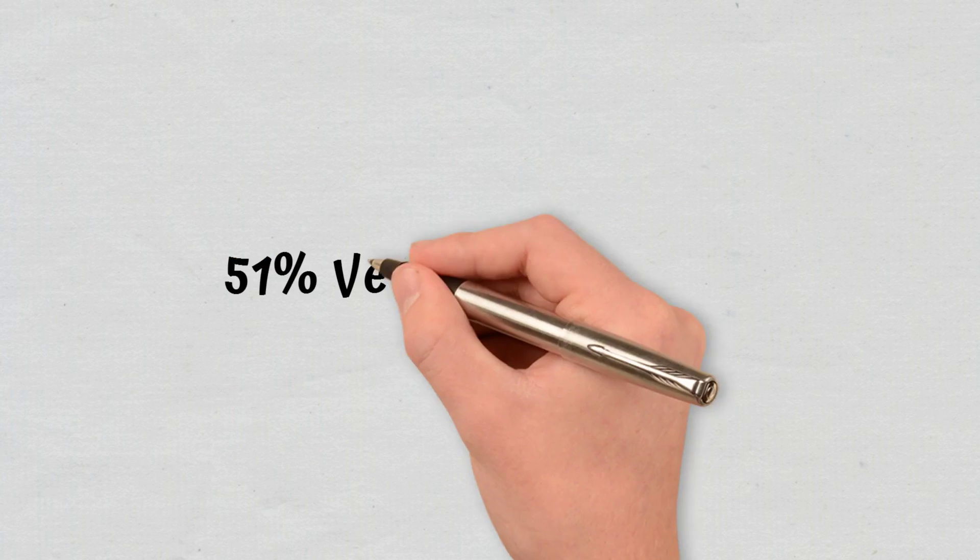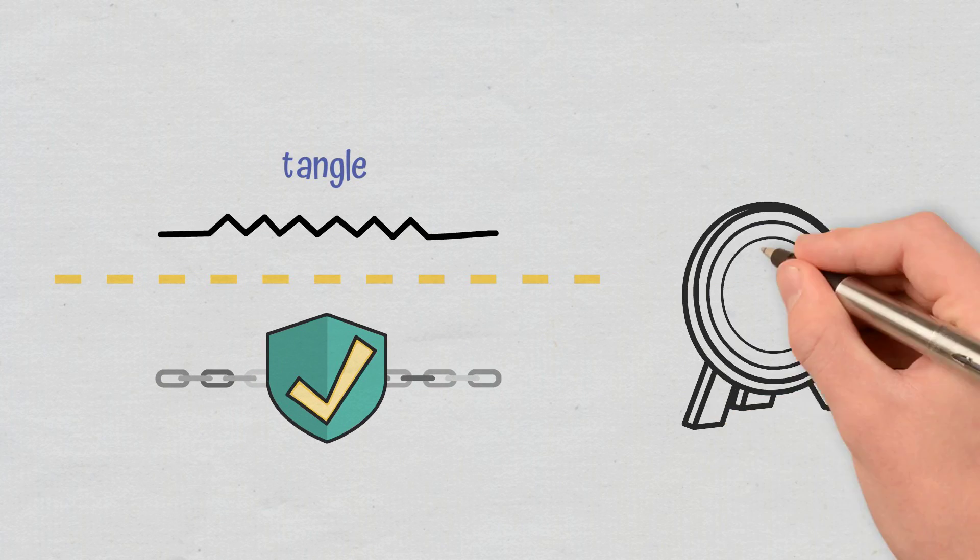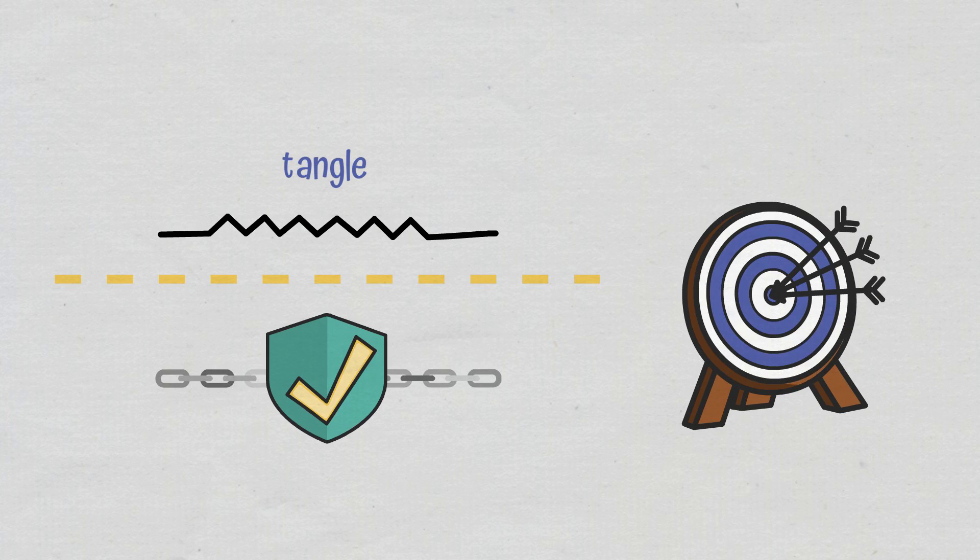51% vs. 34% attack. The tangle, which represents a distributed ledger that is basically different from a blockchain but created with the same goals, could, in theory, fall to an attacker deploying over a third of the network's hash rate, which is known as a 34% attack.